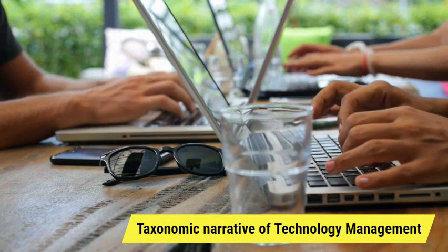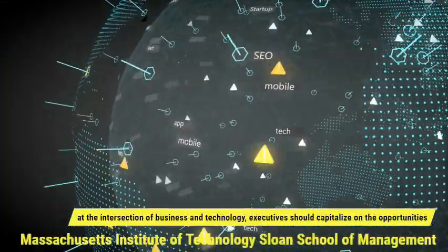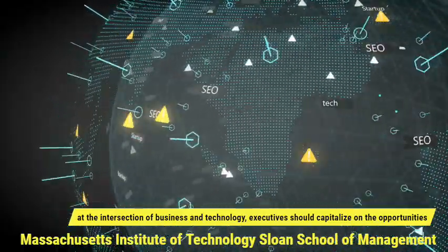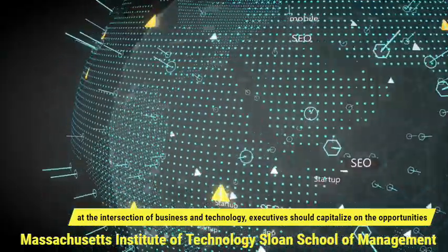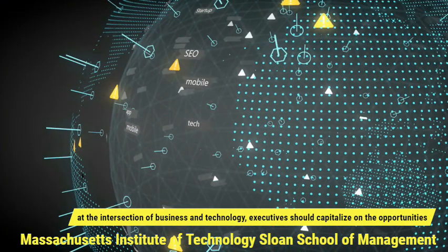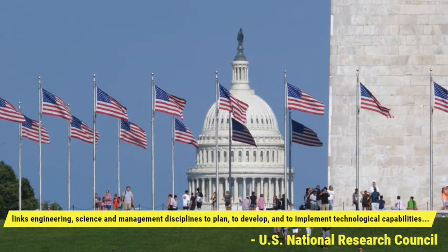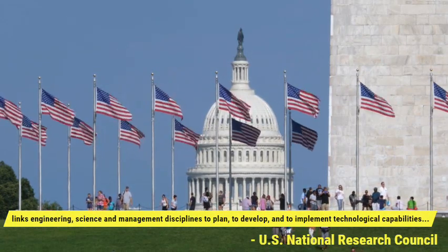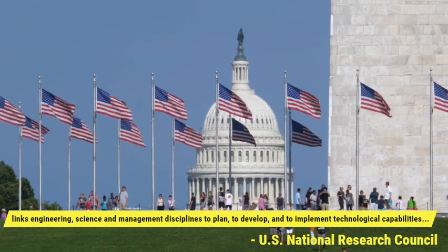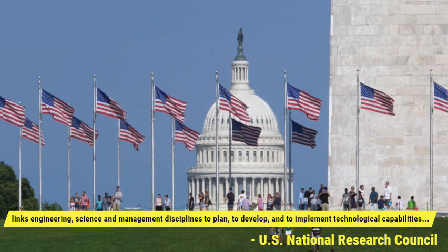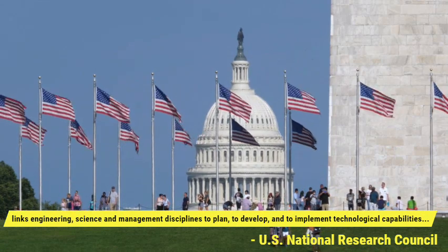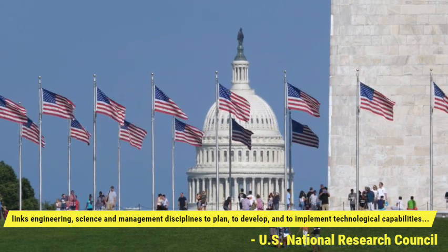What are the taxonomic narratives of technology management? The Massachusetts Institute of Technology Sloan School of Management, one of the world's leading business schools, states that at the intersection of business and technology, new management ideas and research help thoughtful executives capitalize on the opportunities generated by rapid organizational and technological advancements that are deeply interdisciplinary, borderless, and address big compelling problems. According to the U.S. National Research Council, management of technology links engineering, science, and management disciplines to plan, to develop, and to implement technological capabilities to shape and accomplish the strategic and operational goals of an organization.